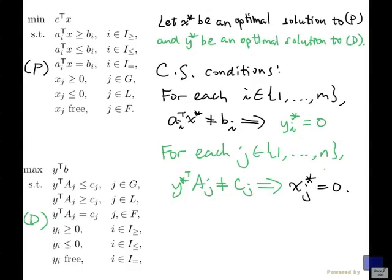The converse is also true. If you have x star and y star feasible, okay, so now, if x star and y star are feasible solutions for their respective problems, if these hold, then x star and y star in fact are optimal solutions.